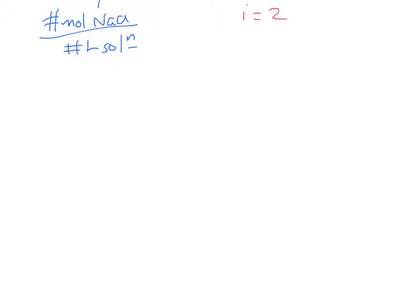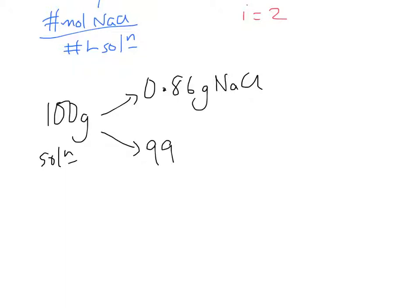One cool thing is, if we've got a percent by mass, we can immediately write a conversion factor. We can say if we have 100 grams of solution, then whatever the percent was is the number of grams of our solute. So we know we've got 0.86 grams of sodium chloride. And I don't think we need it for this problem, but we can go ahead and write down we've got 99.14 grams of H2O.